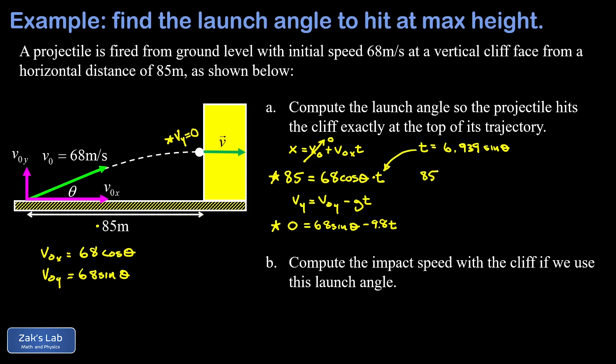Now our goal is to substitute that into the x equation. So the x equation then gives us 85 is equal to 68 cosine theta times 6.939 sine theta. I'll go ahead and multiply the 68 and the 6.939 and we arrive at this equation: 85 is 471.84 cosine theta sine theta.